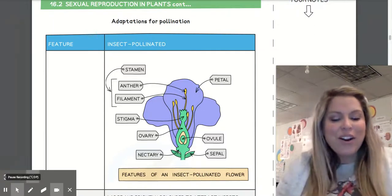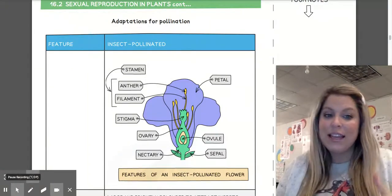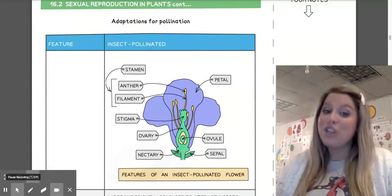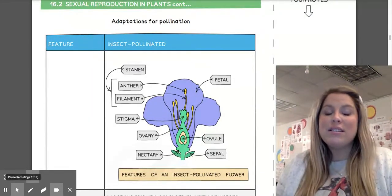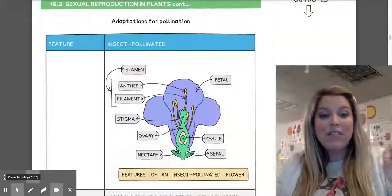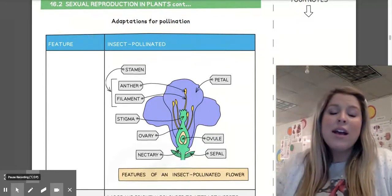But the first thing we need to cover are the adaptations for pollination so germination can ultimately occur. When we talk about the differences in pollination and germination in flowers, pollination is specifically when the pollen is transferred from the male part of the flower to the female portion of the flower.